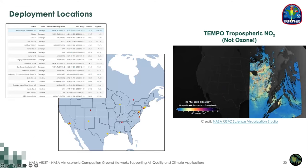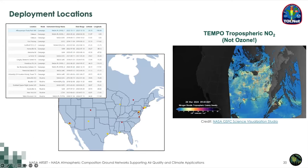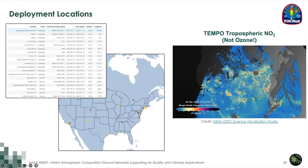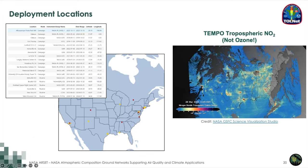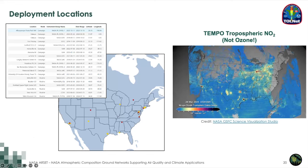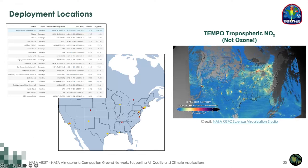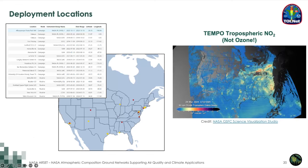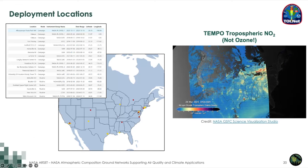A large component of TOLNet historically has been deploying these ozone lidars for field work. The table on the left shows a list of all deployment locations and various sites across the U.S. that have had TOLNet participation. I encourage you if you were located in one of these regions or were part of one of these field campaigns to reach out to TOLNet members to better understand how you might connect with the data.